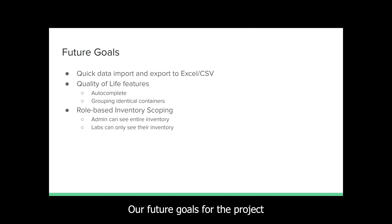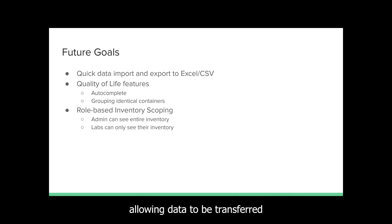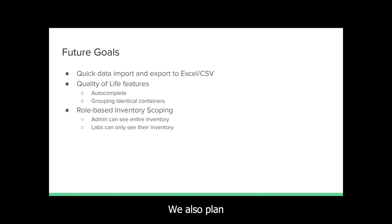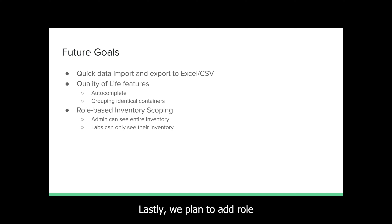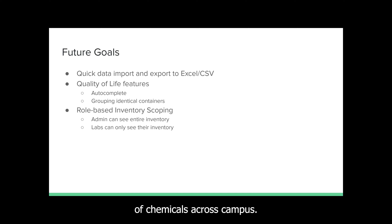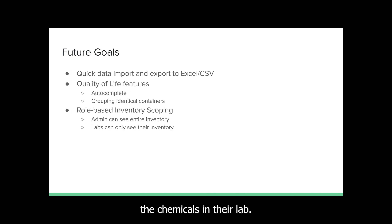Our future goals for the project are to add a quick data import and export functionality, allowing data to be transferred to and from Excel files to make bulk inventory changes easier. We also plan to add quality-of-life features like adding autocompletes to more fields and grouping identical containers to save space on the container page. Lastly, we plan to add role-based inventory scopes so that admins can see the entire inventory of chemicals across campus, but people working in labs can only see the chemicals in their lab.